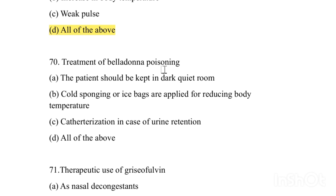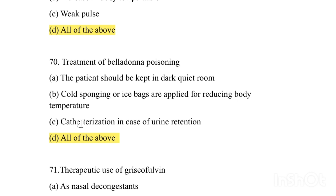Treatment of Belladonna poisoning: Option A: Patient should be kept in a dark, quiet room. Option B: Cold sponging or ice bags applied for reducing body temperature. Option C: Catheterization in case of urine retention. Option D: All of the above. Answer is All of the above — patient kept in dark quiet room, cold sponging or ice bags to reduce body temperature, and catheterization in case of urine retention.